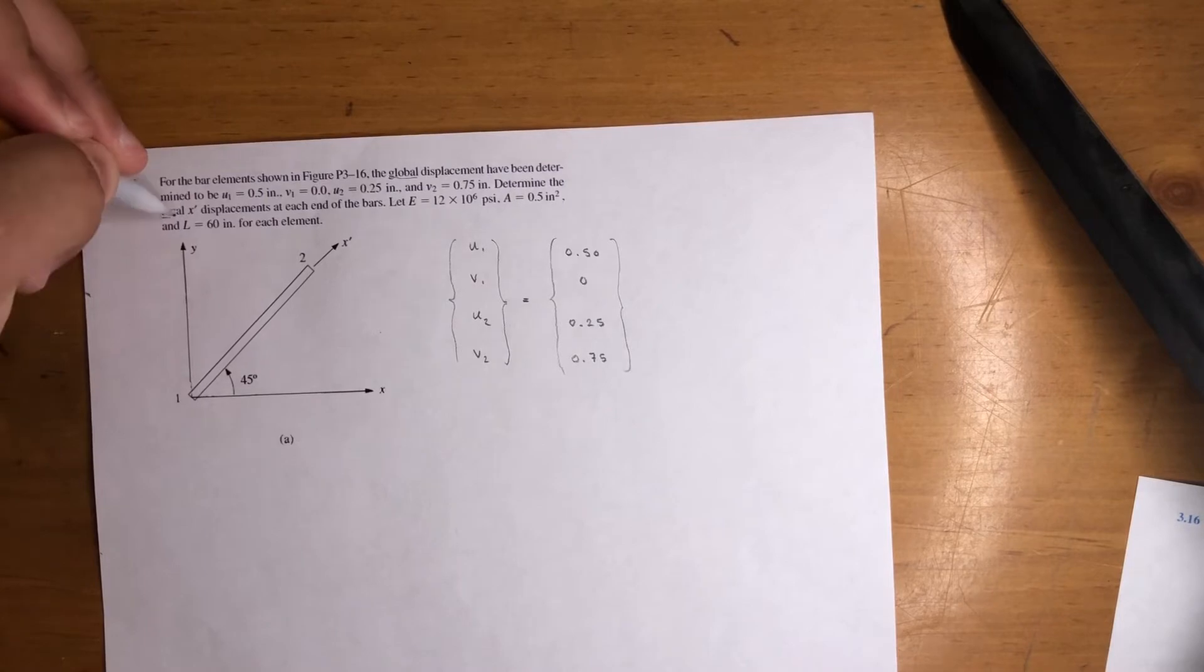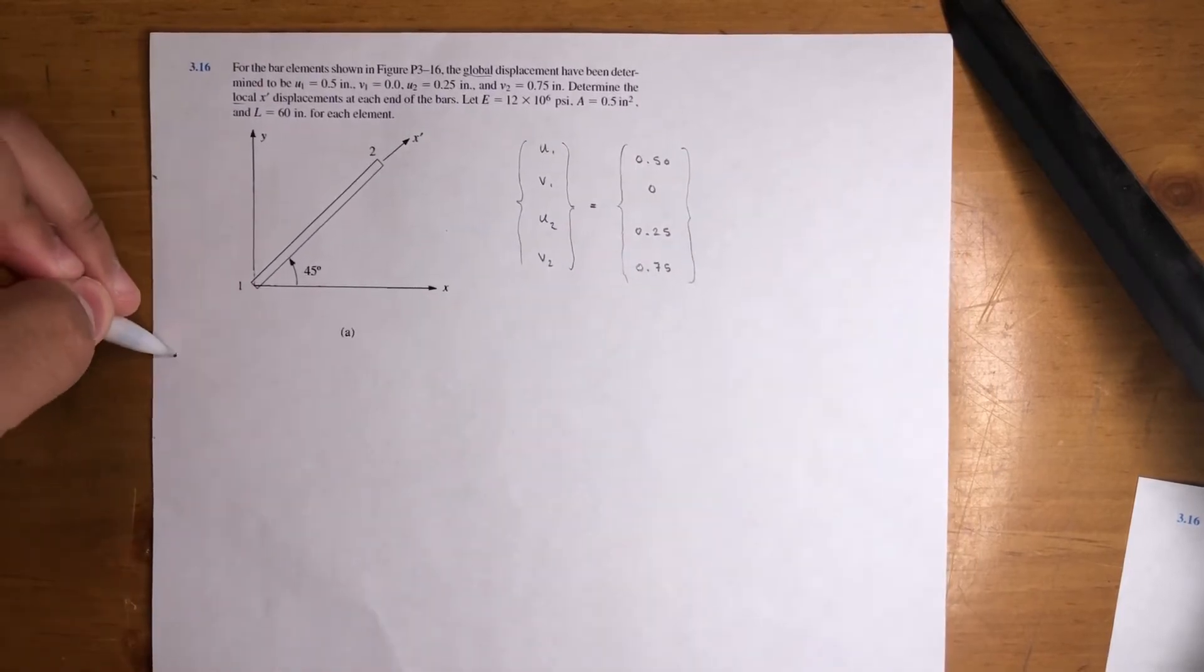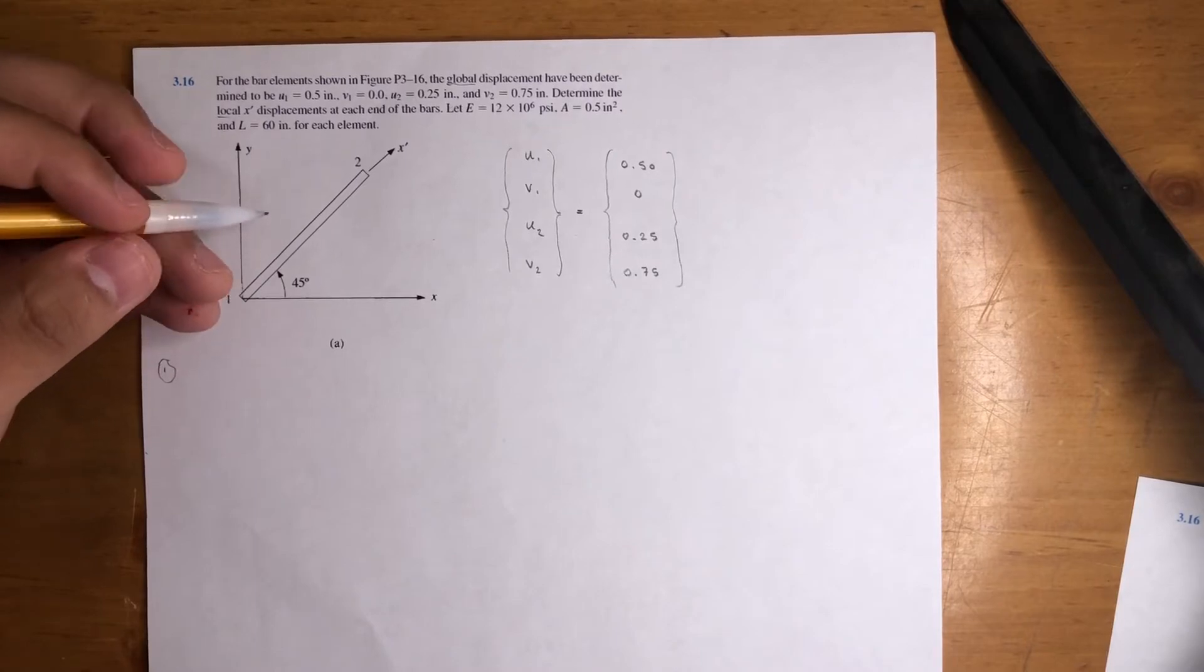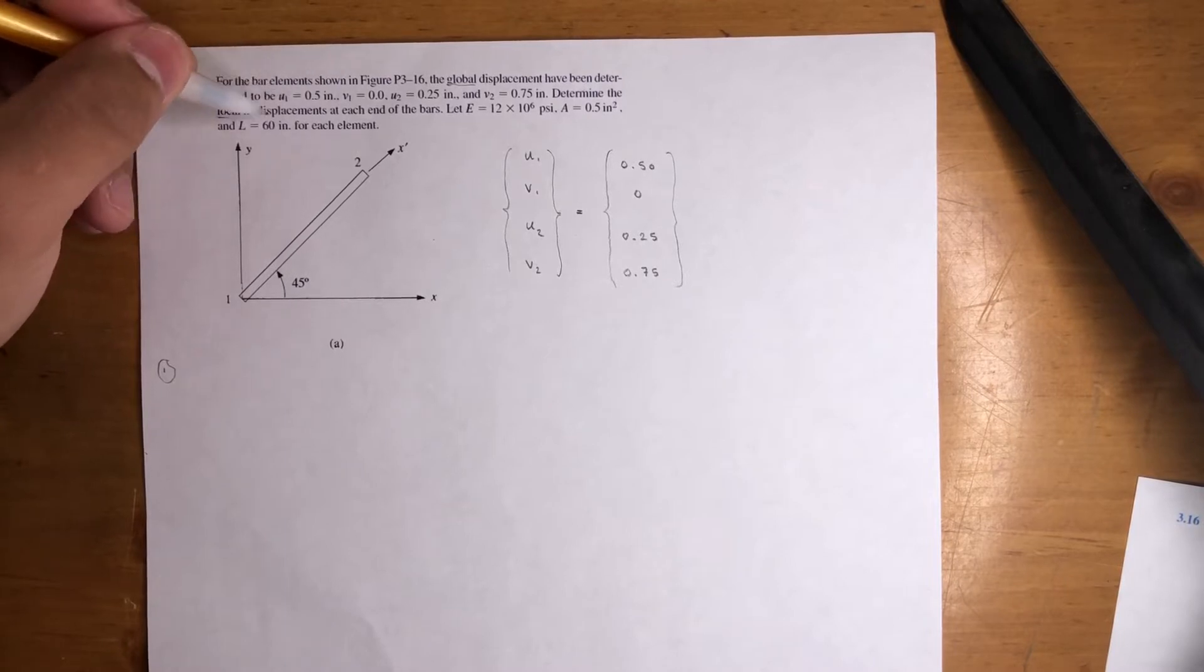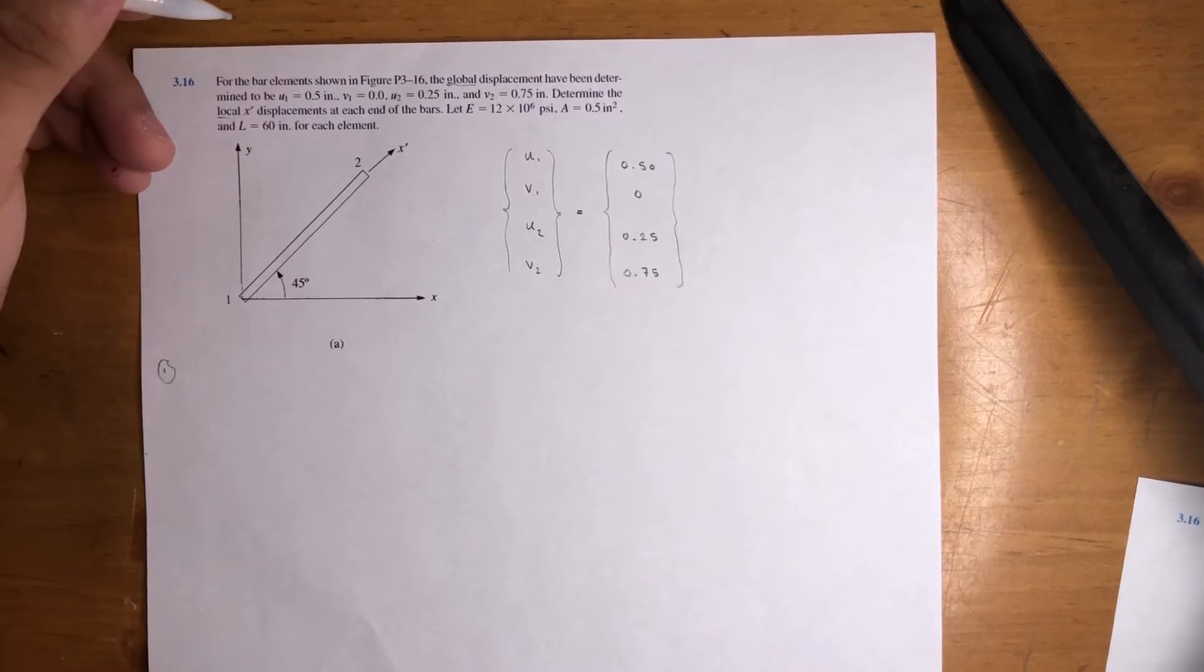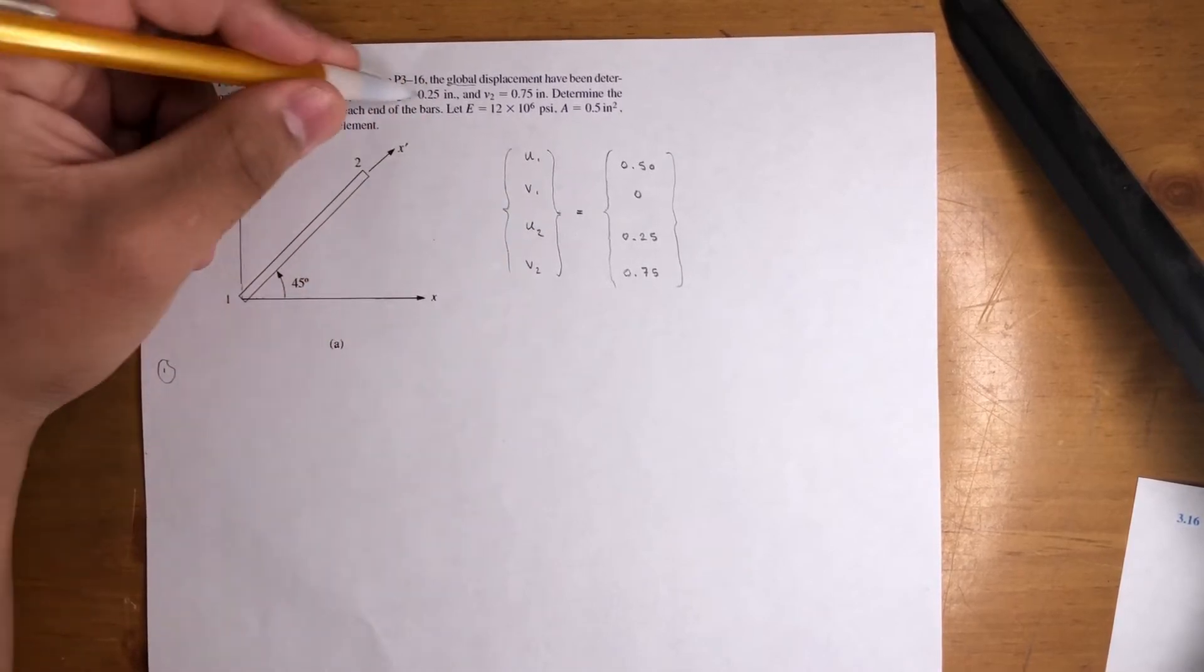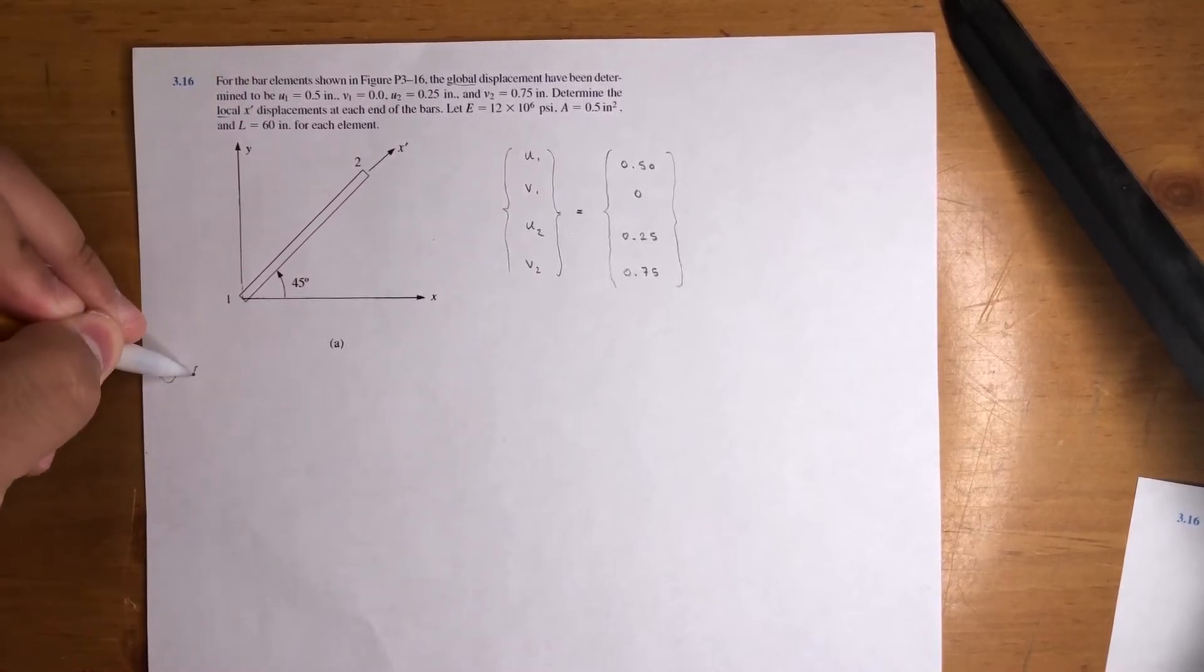But point is, we just want to convert them to local displacement, to a local displacement vector. So kind of just like how I mentioned when we started the problem, we really don't need E, A, or L because we're going from global displacement to local displacement, meaning that we're not going to use any other unit. We're going from distance to distance. So I don't know why they gave us these numbers, but the point is, we just use a transformation matrix to get there.